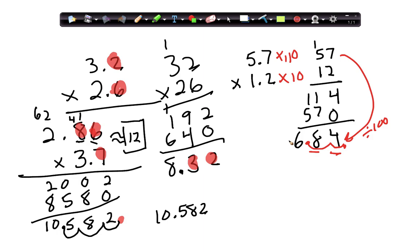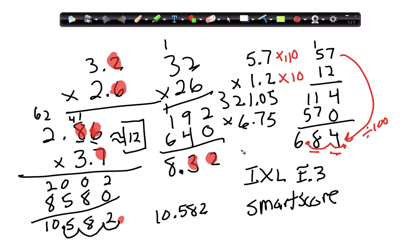Just an announcement if you're watching this and you're working on IXLE3, which is what you should be working on next, that we changed the SMART score to 60 because some of them got pretty long, things like 6.75 times 321.05. So it just would take a long time. It's easy to make one mistake. So that's in the upper scores, like in the 80s and 90s or 70s and 80s for SMART score. So SMART score of 60 is full credit on E3.